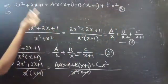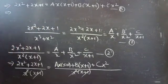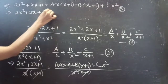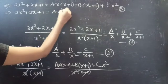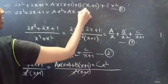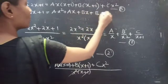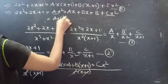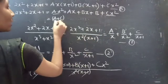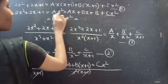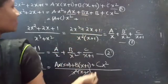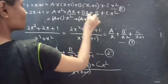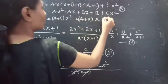Now simplify to compare coefficients of x squared, x, and the constant. Expanding: 2x squared plus 2x plus 1 equals a into x squared plus ax plus bx plus b plus cx squared. Taking x squared common from the a and c terms gives a plus c into x squared. Taking x common from ax and bx gives a plus b into x, and the constant is b. Consider this as equation 4.